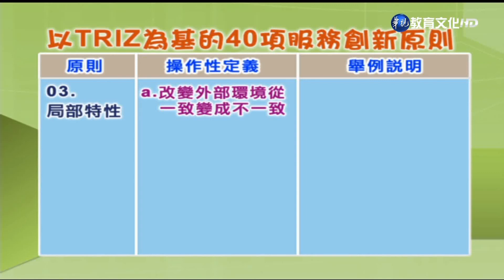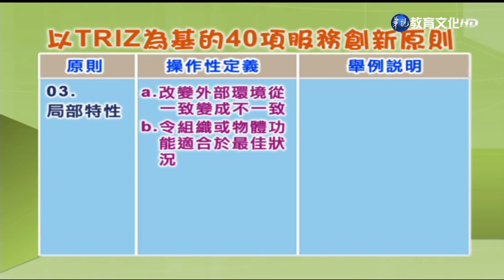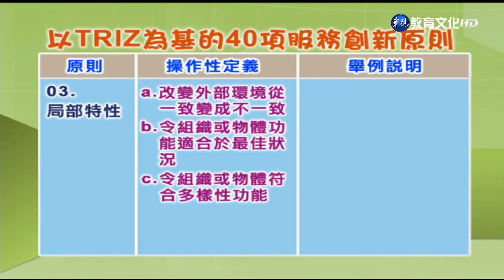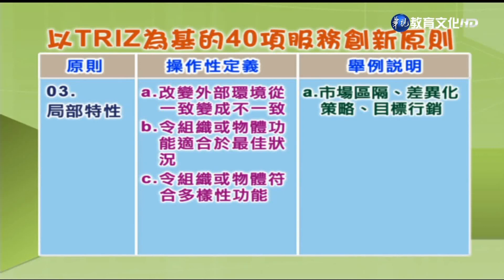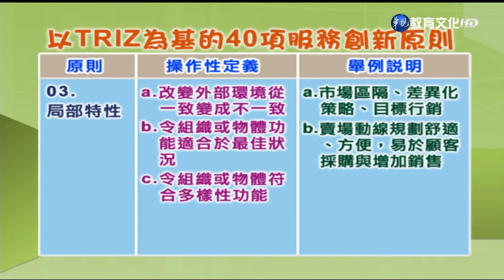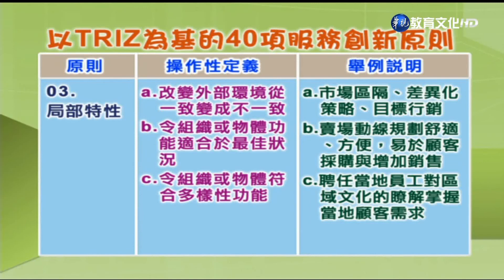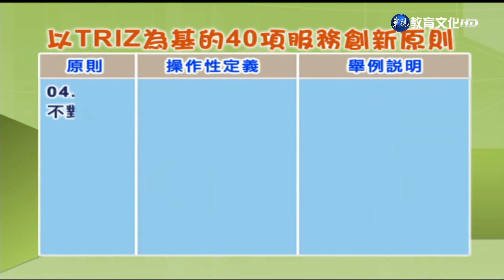第3项「局部特性」：A.改变外部环境从一致变成不一致；B.令组织或物体功能适于最佳状况；C.令物体或组织符合多样性功能。举例：A.市场区隔、差异化策略、目标行销；B.卖场动线规划，舒适方便有异于顾客采购并增加销售；C.聘用当地员工，对区域文化了解，掌握当地顾客需求。